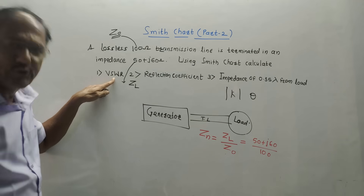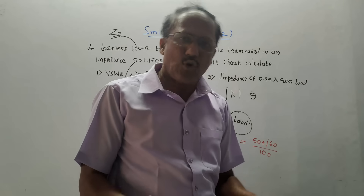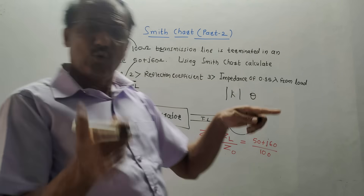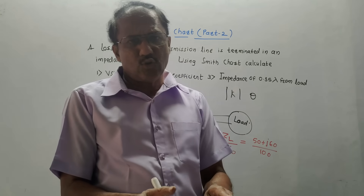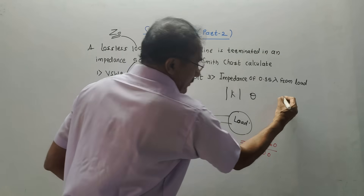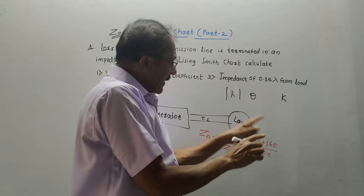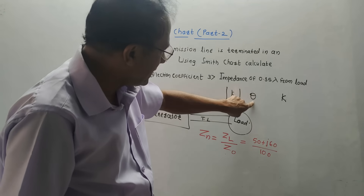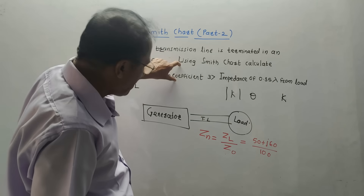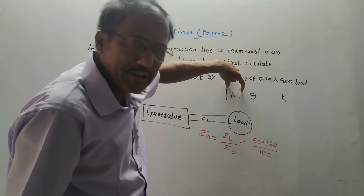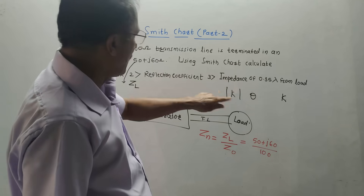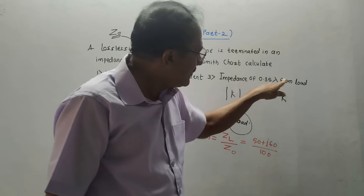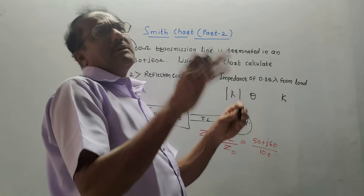Using the SMIC chart, calculate: first, VSWR (voltage standing wave ratio); second, reflection coefficient — that means magnitude mod K and angle theta; and third, the impedance at 0.35 lambda from the load, where lambda is the wavelength.